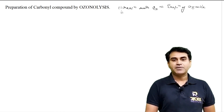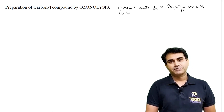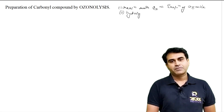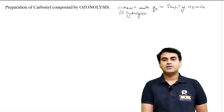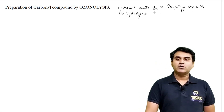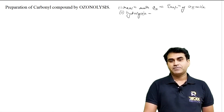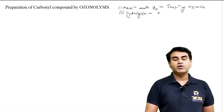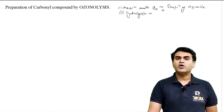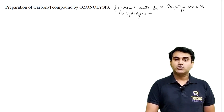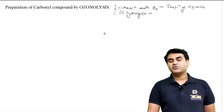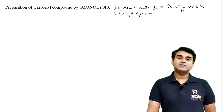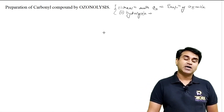और उसके बाद उसका second part होता है hydrolysis part - that is decomposition of ozonide, hydrolysis of ozonide और decomposition of ozonide. और दोनों steps का जो final product होता है, that's the carbonyl compound.